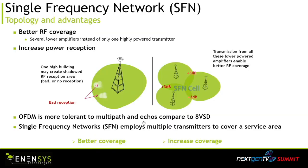SFN is part of the standard and can be done right now — it's not an option. As soon as you have one transmitter, it's already SFN capable. You can start with your high power transmitter now, and as soon as you see poor reception areas, you can add a second transmitter on exactly the same frequency — it's not a repeater or gap filler and does not use another frequency. You can build it step by step.